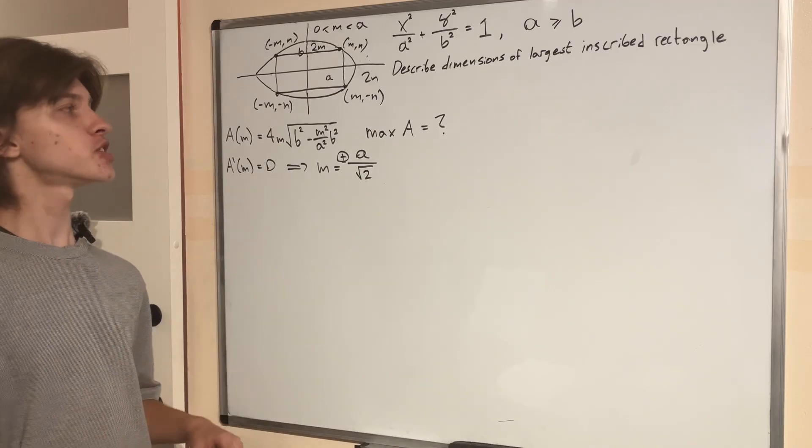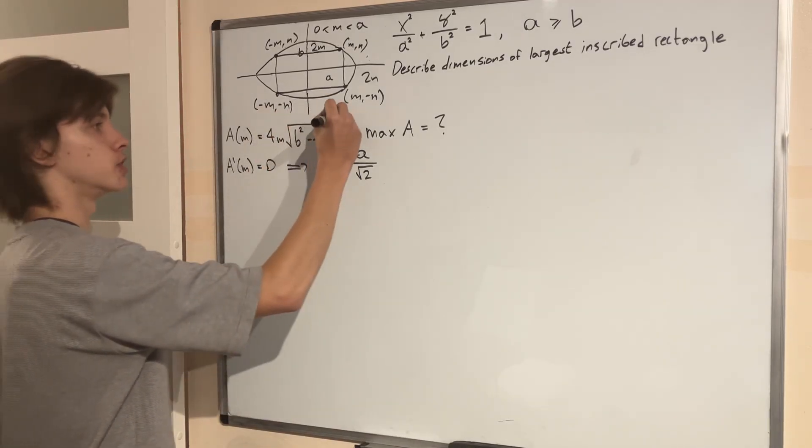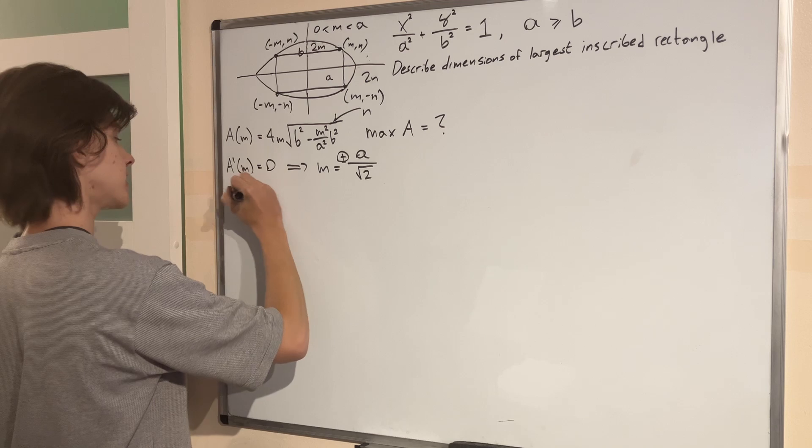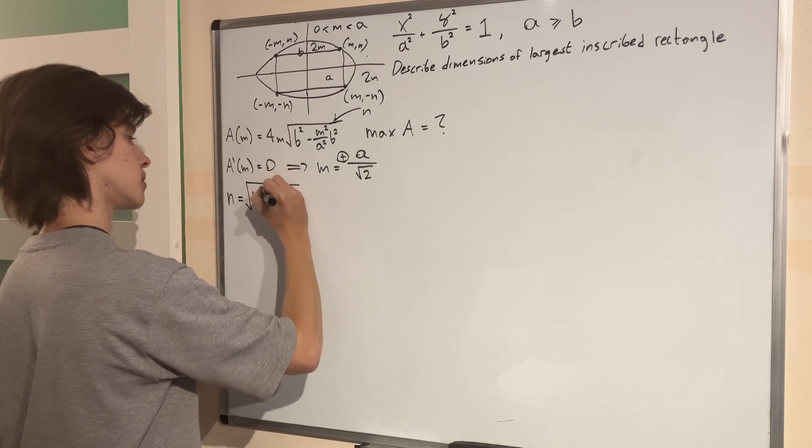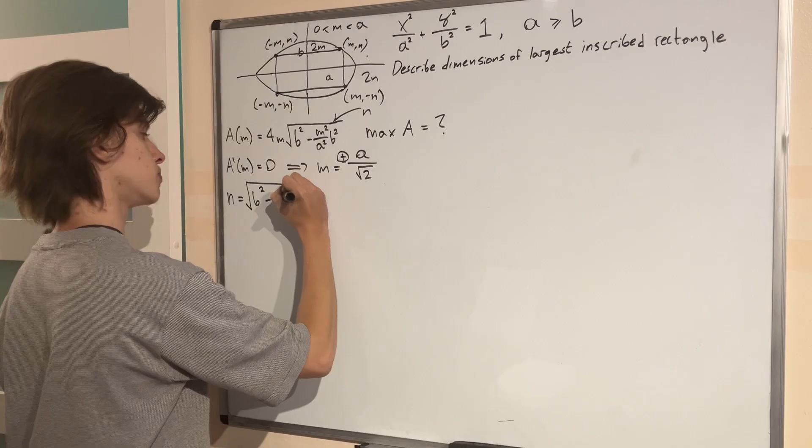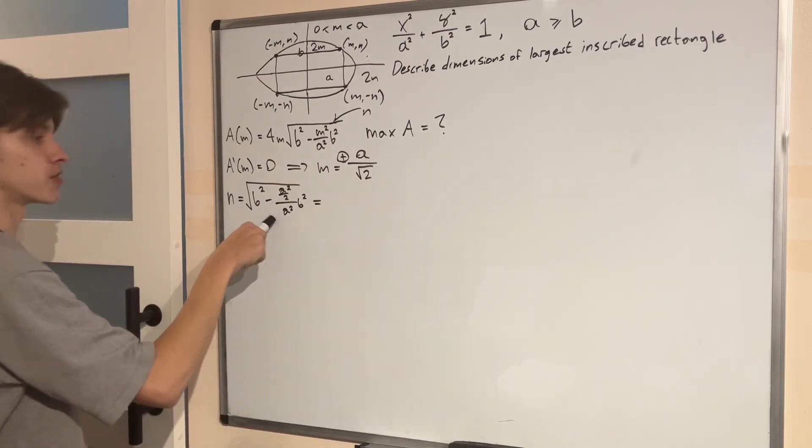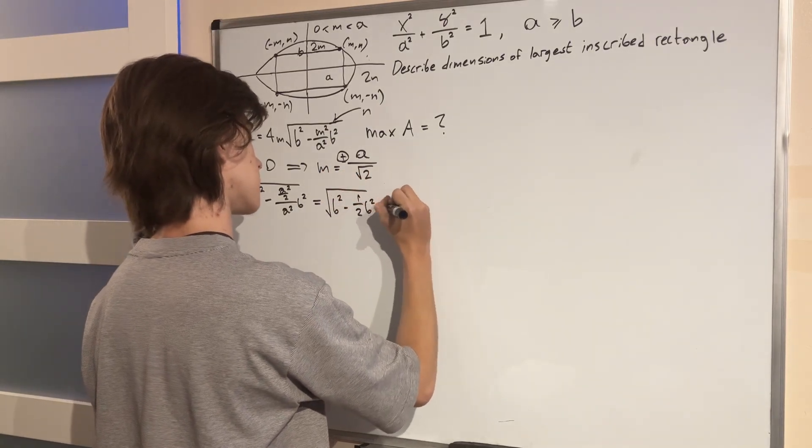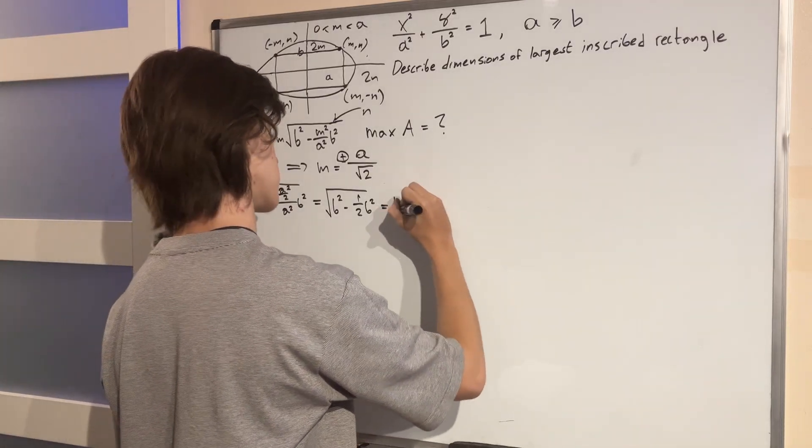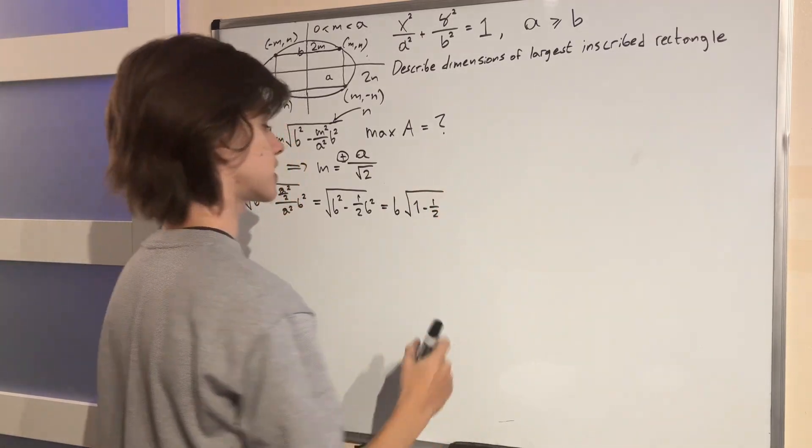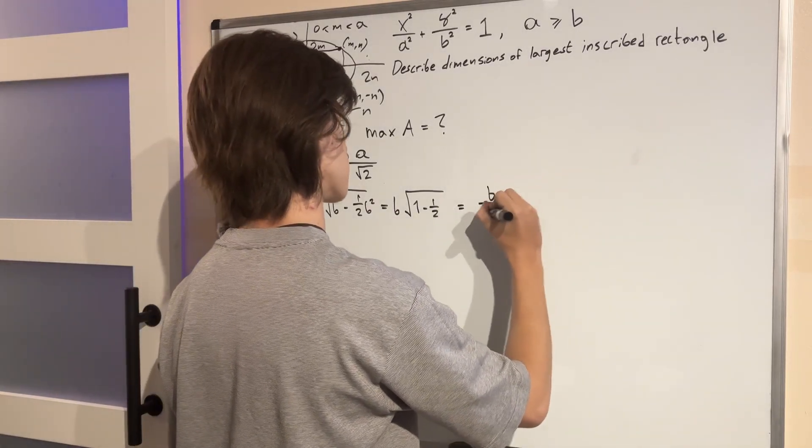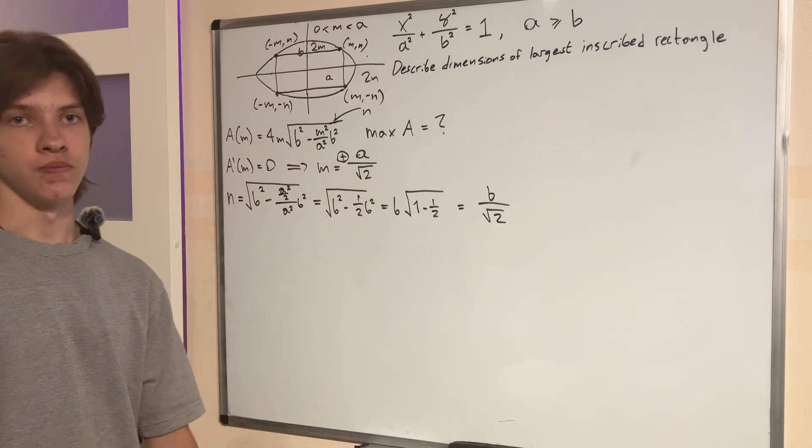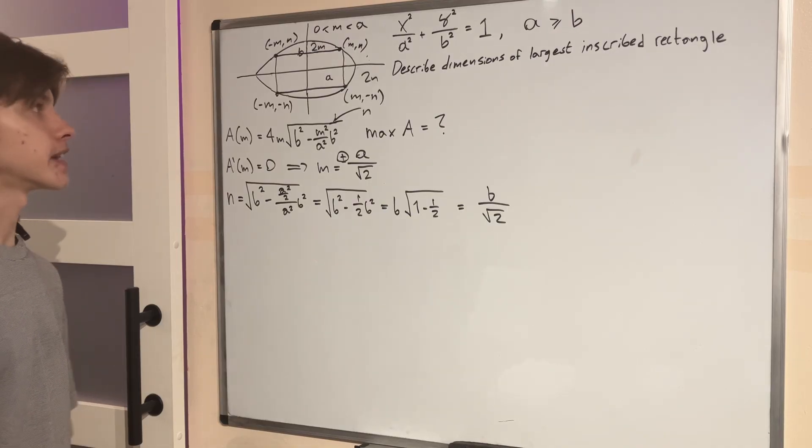So remember, we still want to find the dimensions of this rectangle, but we can easily do that because M is equal to this square root right here. So we can simply find N when M is equal to this value. So N is going to equal B squared minus M squared, so A squared over two, over A squared times B squared. This part with the A right here simply becomes one half, so we get B squared minus half of B squared. And so we can take the B squared out of the root to get B times one minus one half. And look at that, there's just B times the root of one half, or B over the square root of two. How interesting, when M is equal to A over root two, N is equal to B over root two.